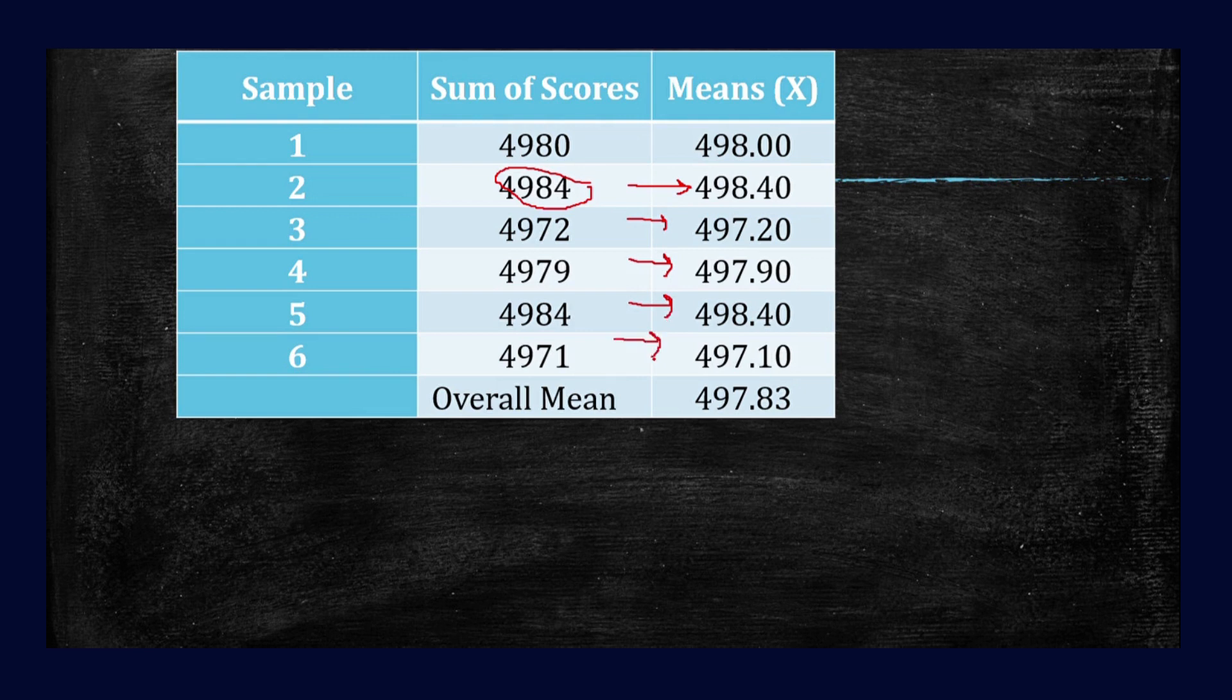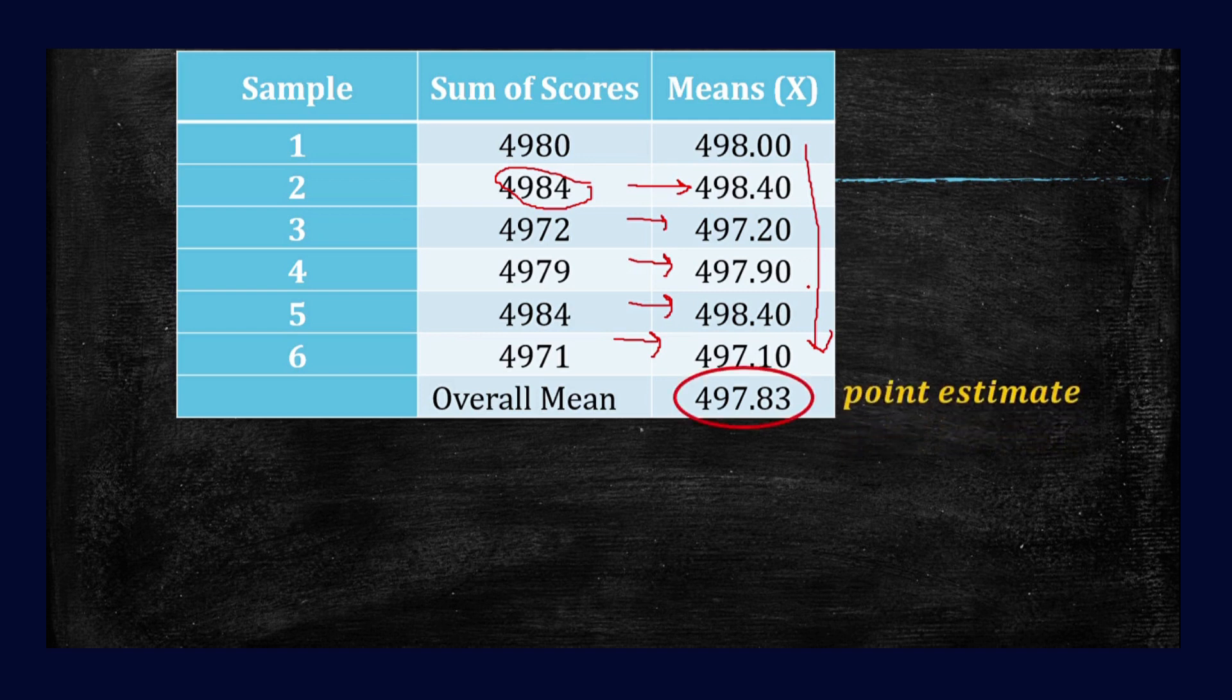So we didn't show the process for sample 2 through sample 6 because it's the same. Now how can we obtain our overall mean? Just simply add up all these means. Add them together then divide by 6. So we can obtain our overall mean equal to 497.83. So that overall mean is the point estimate of our example, 497.83. So this one is the point estimate of the population.